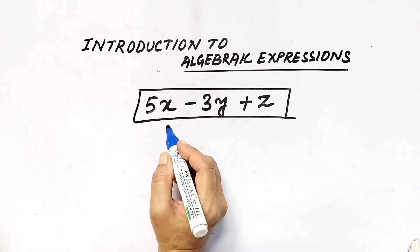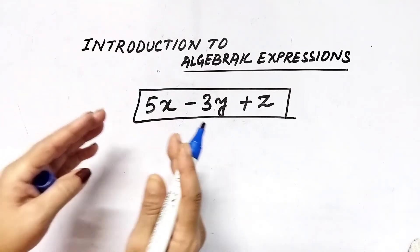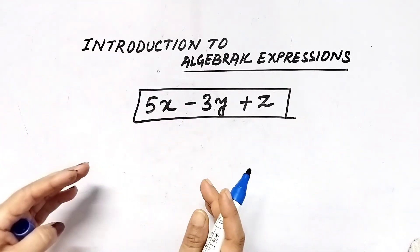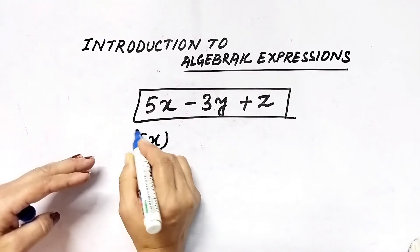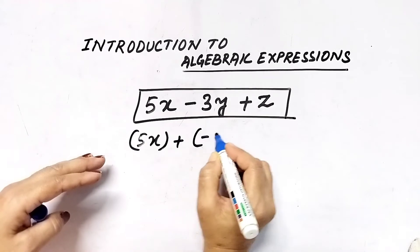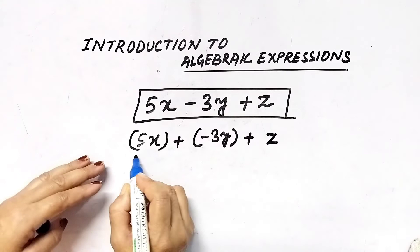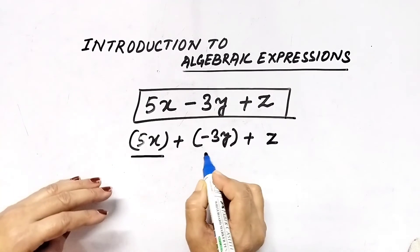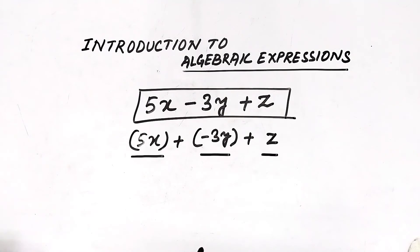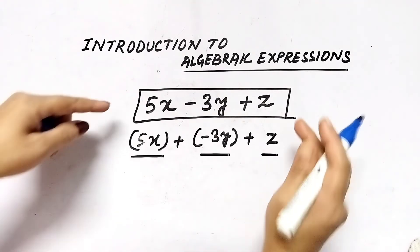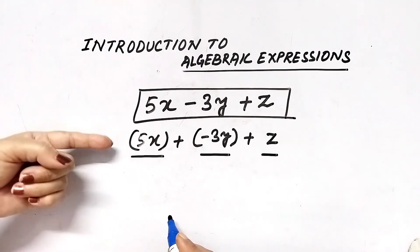Terms means each part of the expression which are added to form the expression. Here, 5x is added to minus 3y, which is added to z. That means 5x is one term, negative 3y is one term, and z is another term. These are the terms of this expression.